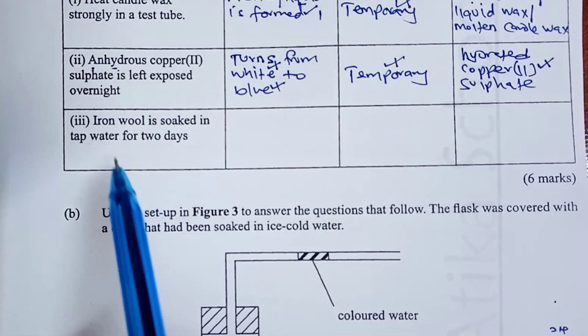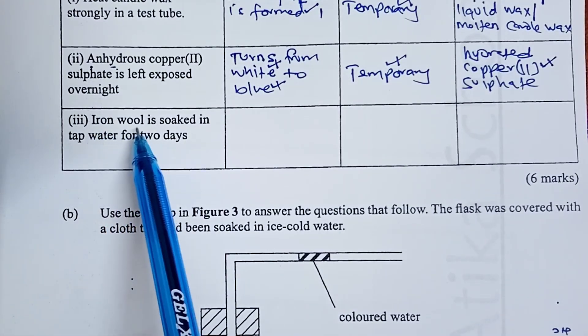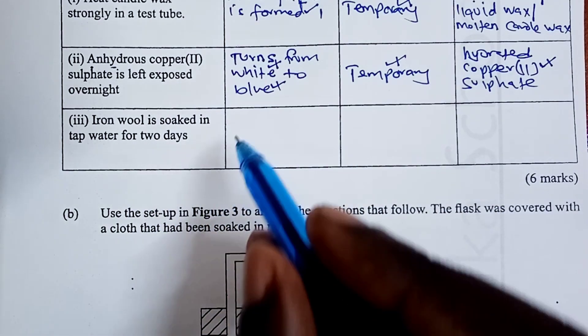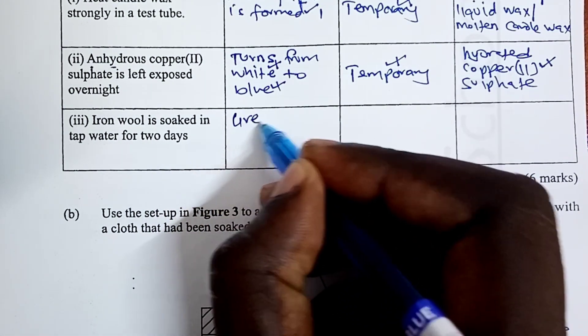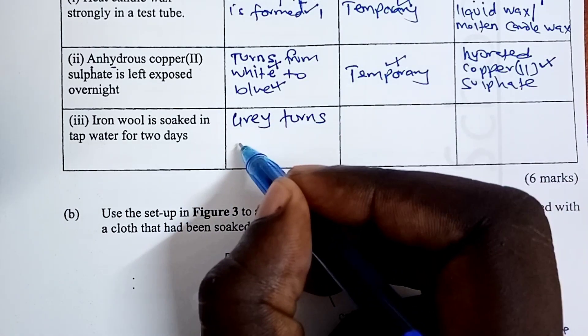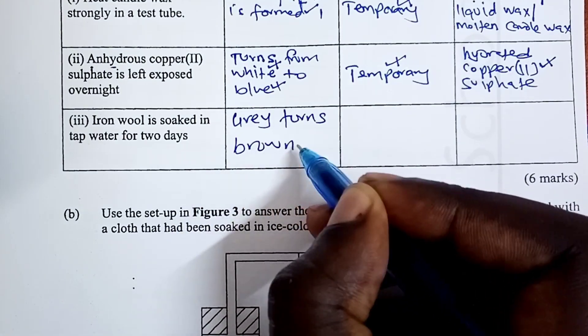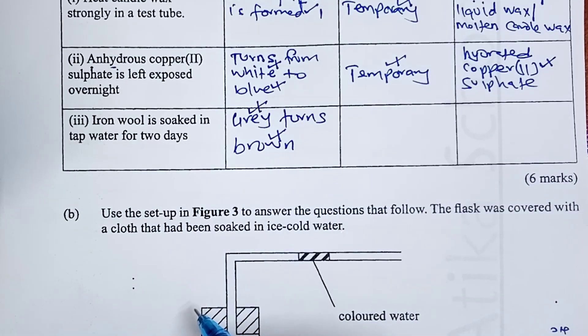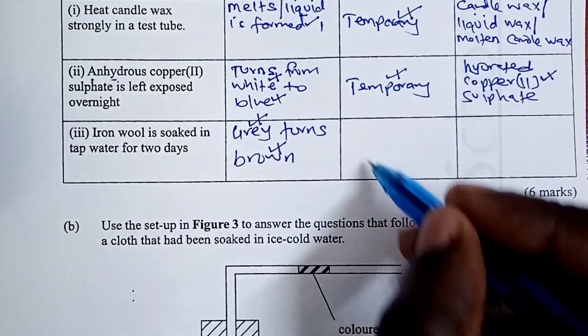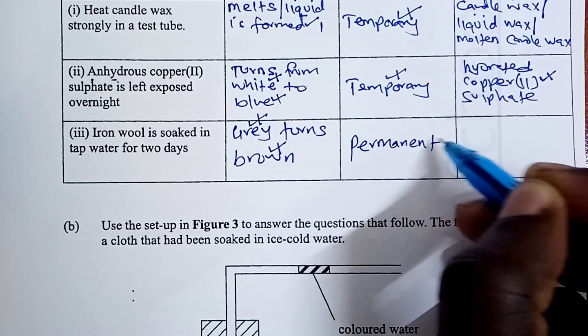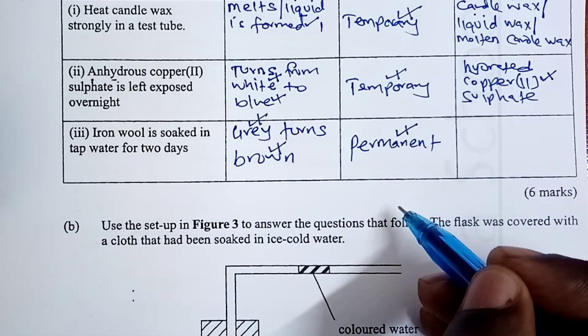Experiment three, we are told iron wool is soaked in tap water for two days. The observation would be that grey iron wool turns brown. Again, here, grey half a mark, brown half a mark. If you missed the first color, we deny you even for the second color. This, of course, we know is rusting, and therefore, the type of change is permanent for a half a mark.